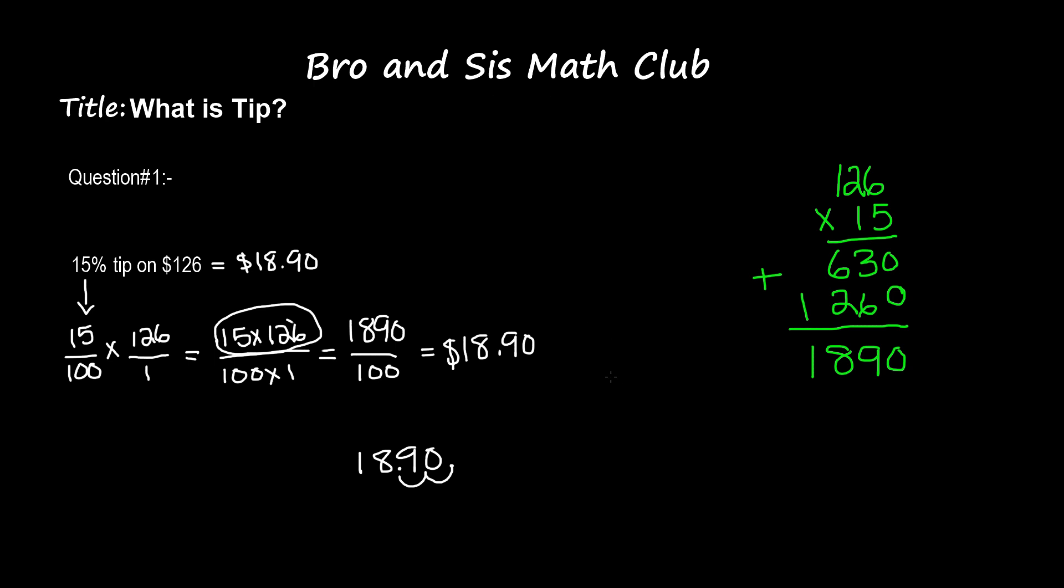So now we have $126 and now we need to add that with the amount of tip we're going to pay, which is $18.90. When we add, 0 plus 0 is 0, 0 plus 9 is 9, we bring down the decimal point, and then 6 plus 8 gives us 14.